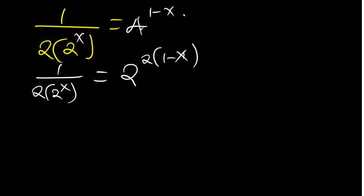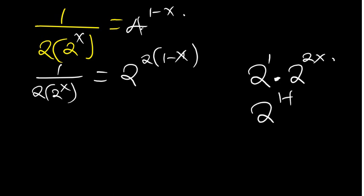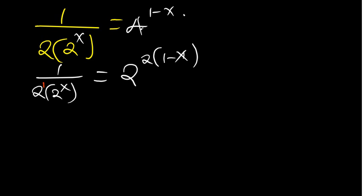Now, if we have 2 times 2 to the power 2x, the power of the first 2 is 1, so we add the powers to get 1 plus 2x. Applying this to our equation, this 2 has power 1, so we add the powers to get 1 plus x, giving us 1 over 2 to the power 1 plus x.